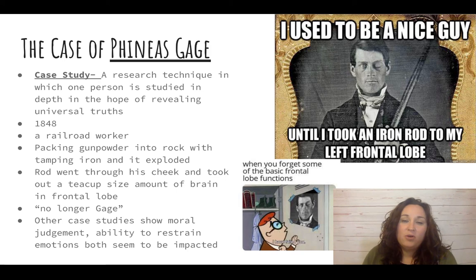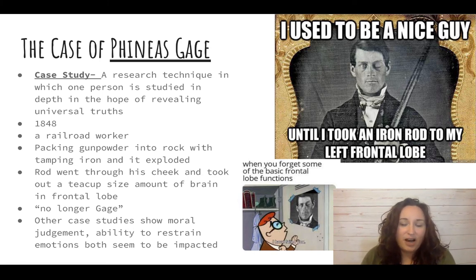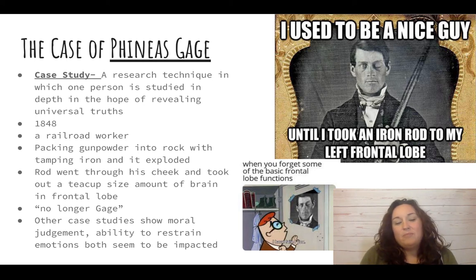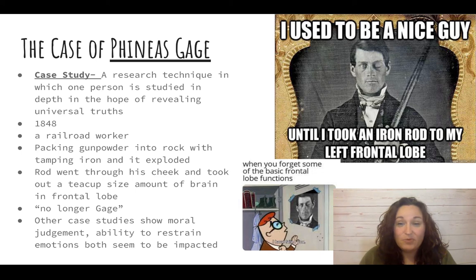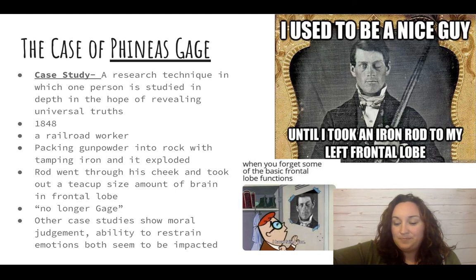What they found was that his friends described him as no longer Gage — he was different. His judgment and impulse control were weaker, so he was more reactive and more aggressive, when before he was not like that. His personality changed, and his emotions also seemed to be impacted. This told us that the frontal lobe was involved in these types of behaviors. But there were still plenty of things that Phineas Gage could do — walk around, talk. He showed in the 1800s that specific parts of the brain do specific things.